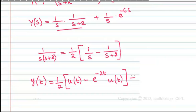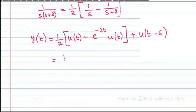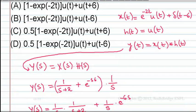Taking the inverse Laplace transform: (1/2)·[1/s] → (1/2)·u(t) and (1/2)·[1/(s+2)] → (1/2)·e^(-2t)·u(t). The term (1/s)·e^(-6s) gives u(t-6) due to the time-shift property. Therefore, y(t) = (1/2)·[1 - e^(-2t)]·u(t) + u(t-6). This corresponds to option D, which is the correct answer.